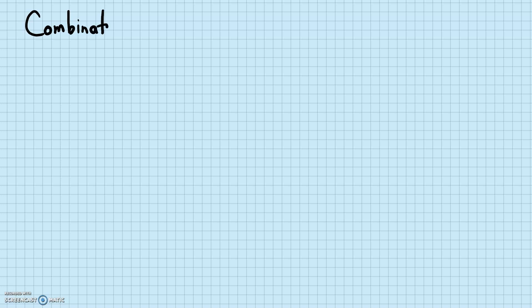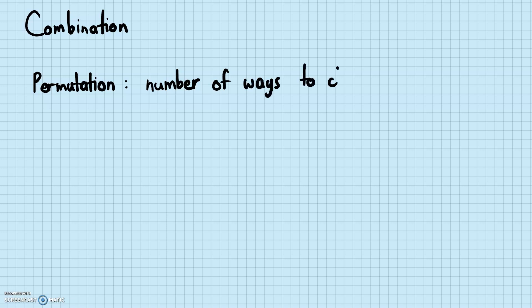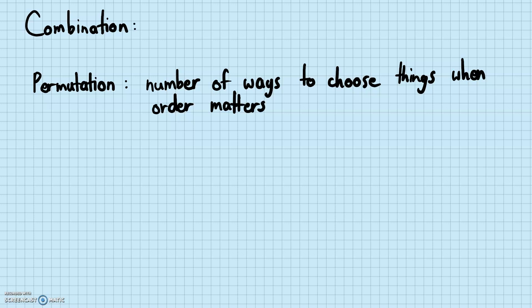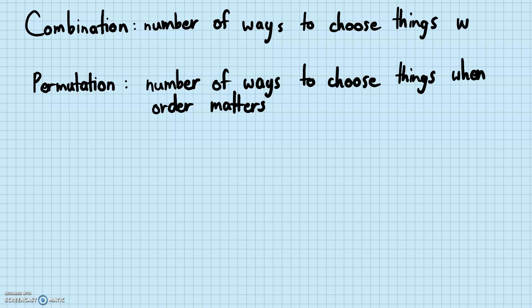Today we will be looking at combinations, which is similar but different from permutation. Remember, for permutation it was the number of ways to choose things when the order mattered. Combination has a very similar definition — it's also the number of ways to choose things, but the order doesn't matter here.